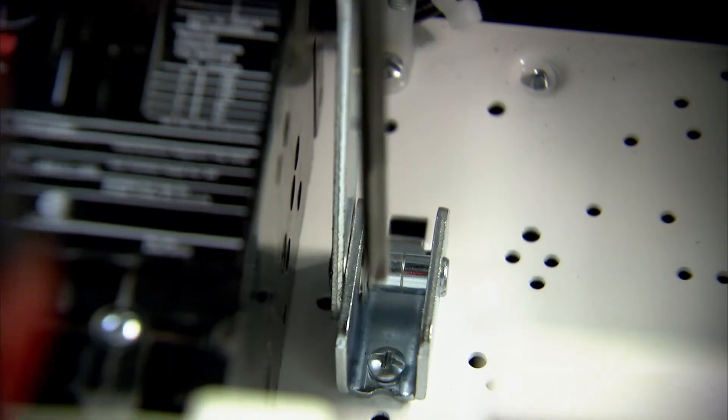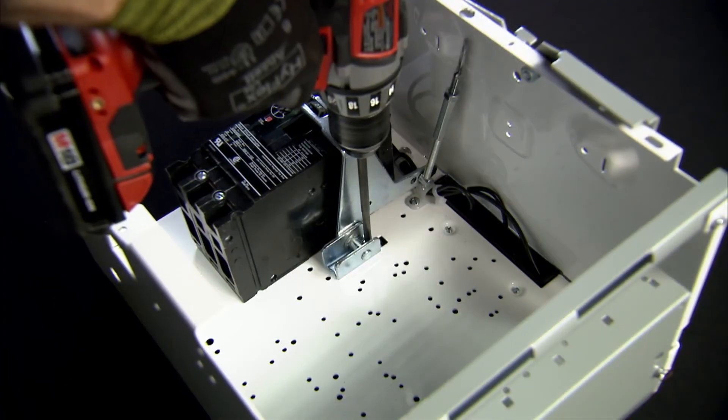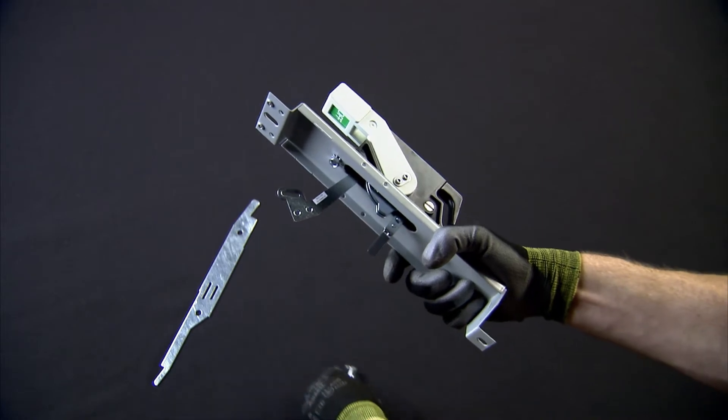Screw the linkage bracket to the back plate. Assemble the handle and linkage system.